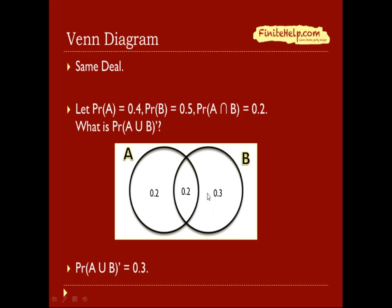all of B is 0.5, so here's 0.3 in the crescent-shaped region here on the right, and then 0.2 in this region, which makes the union 0.7.